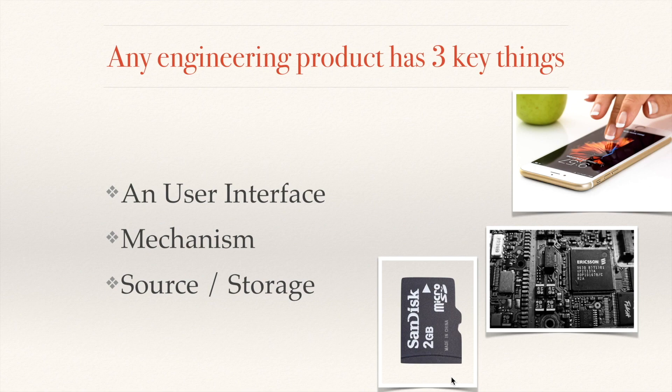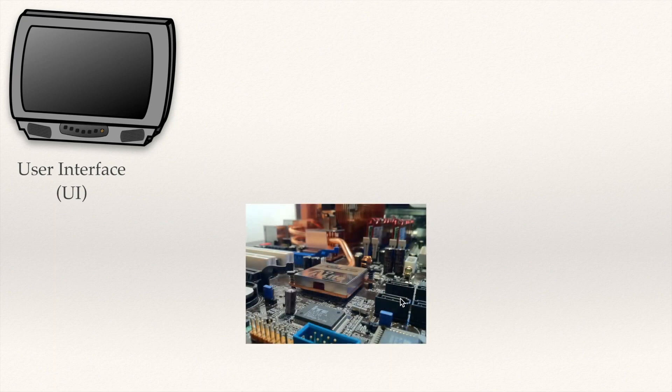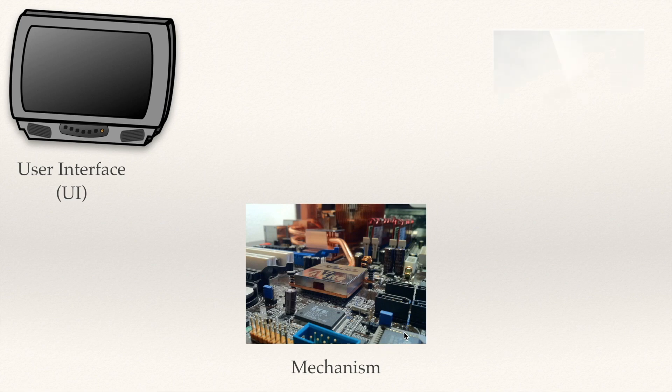Any engineering product has three key things: a user interface, a mechanism, and a storage. Now let's talk about a television. This is actually the user interface — it has nice little buttons here by using which you can interact with the TV, change the channel, adjust the volume, and do all these things. And it has this mechanism — if you open your TV with a screwdriver, you're going to see the CRT and all these circuits which control the TV. This is the internal part, the brain of the TV.